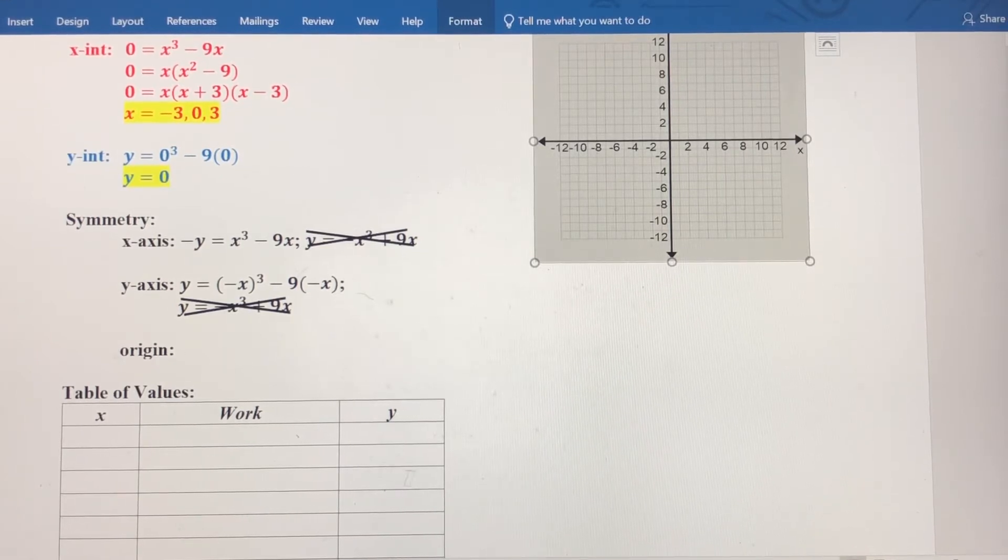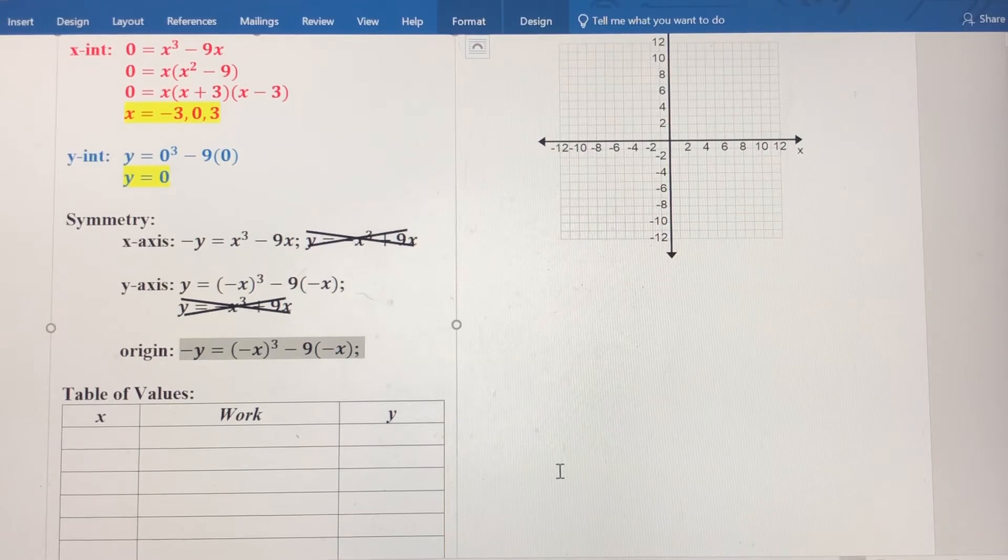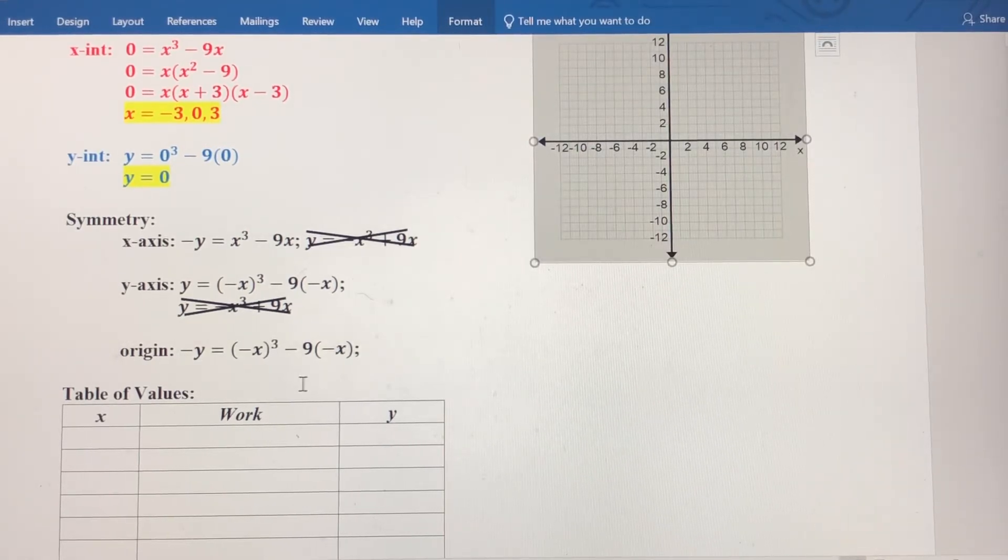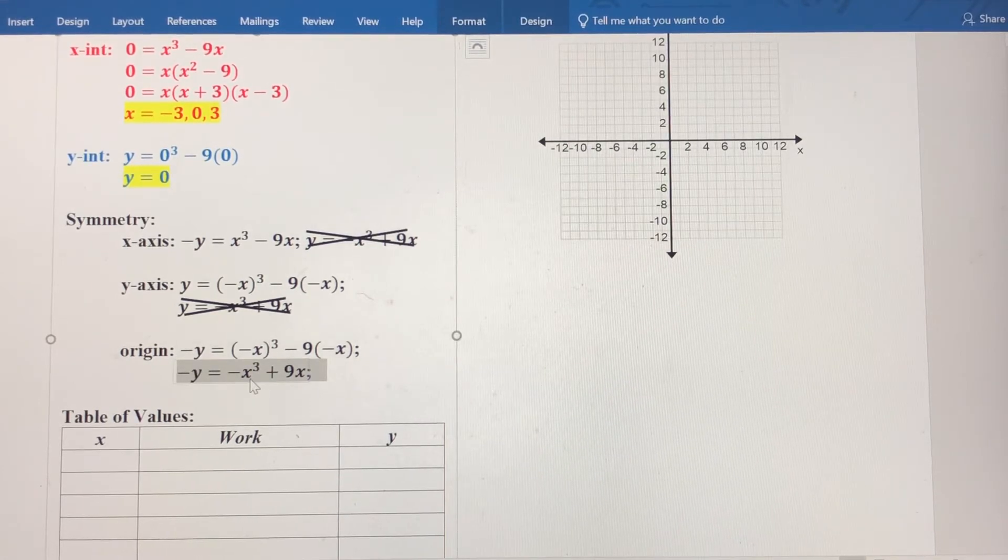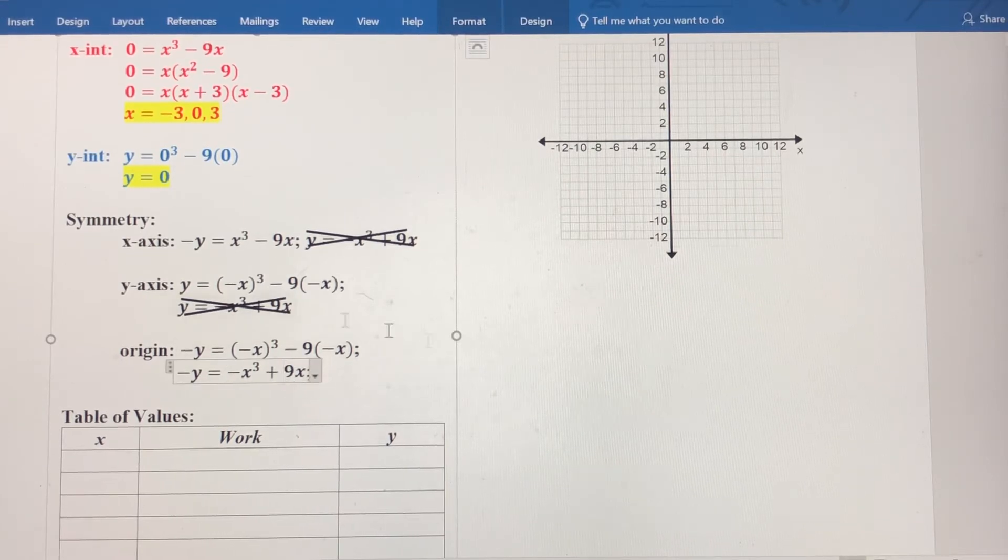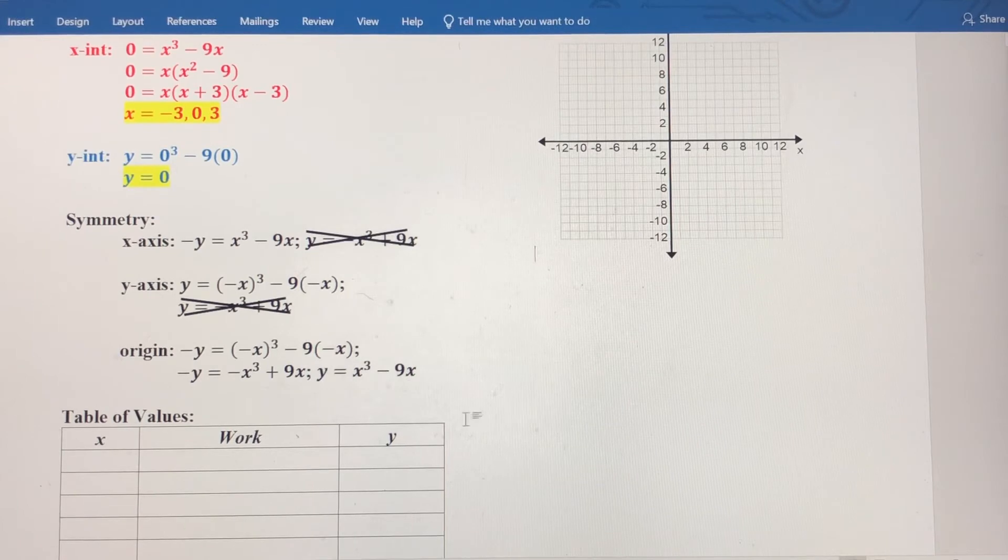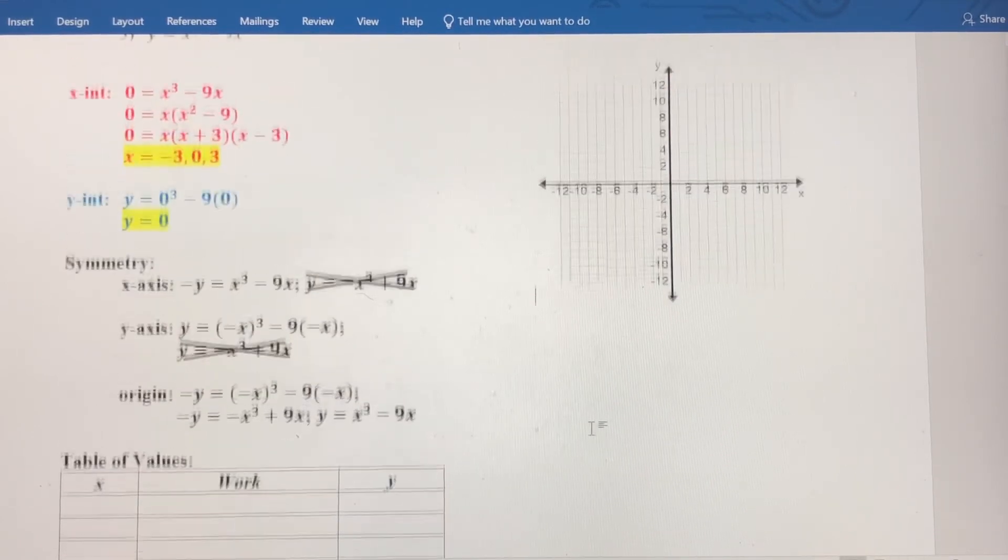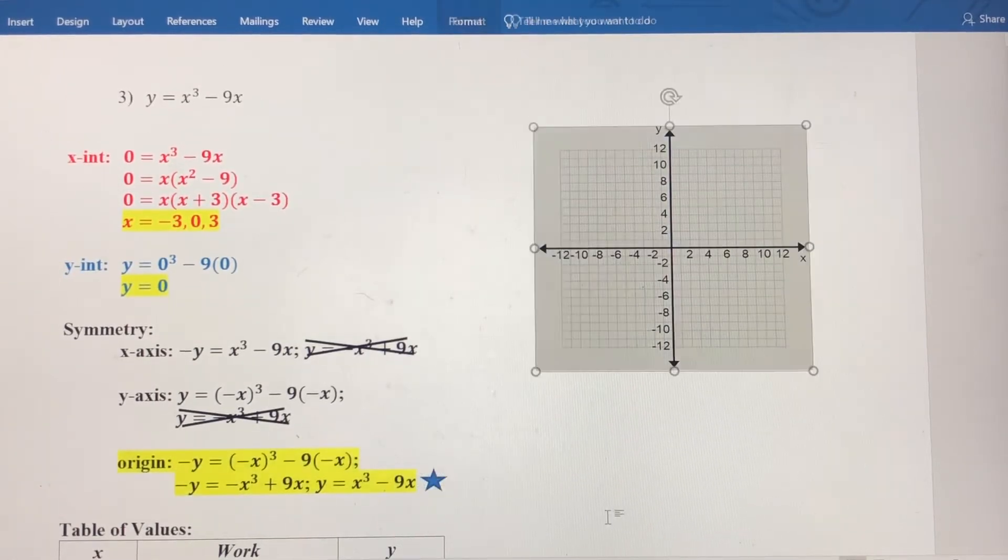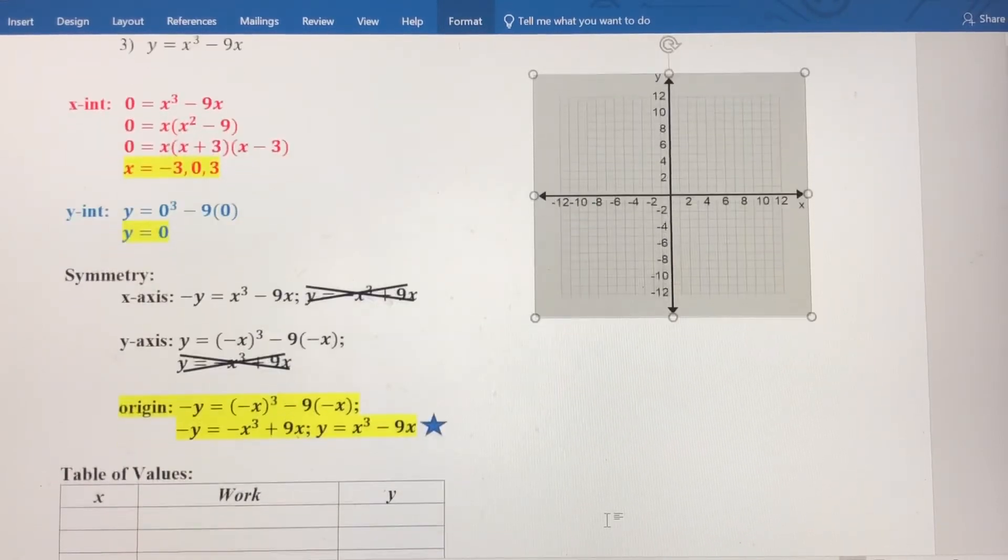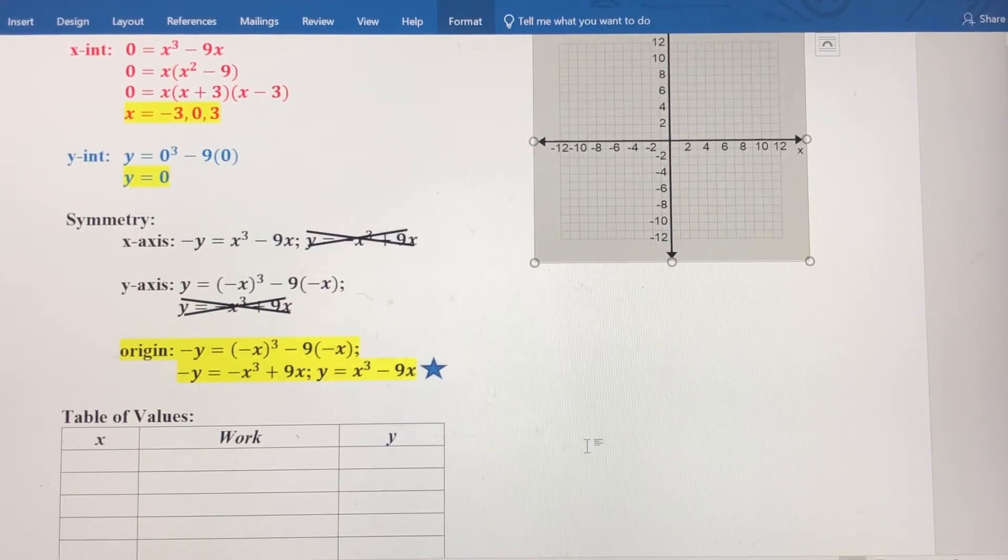Finally, let's check origin symmetry. I'm going to replace y with negative y and x with negative x. Some cleaning up to do here. I'm going to leave this negative y alone for now. When I cube negative x, I get negative x to the third power. Negative 9 times negative x is positive 9x. And then if I multiply everything by negative 1, I get y equals x cubed minus 9x. Now notice that matches the equation I started with. So this graph is going to have what we call origin symmetry. And that's very helpful. It's going to help us make our table of values a little bit more easily.